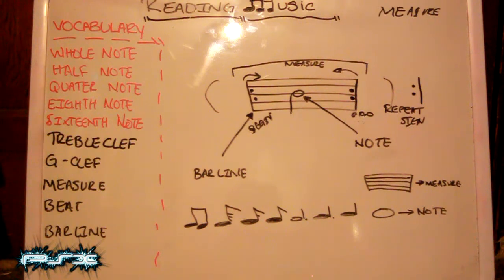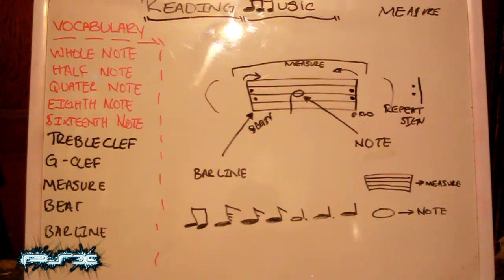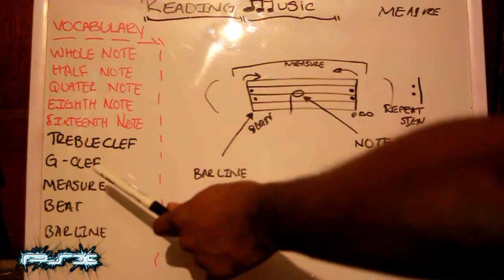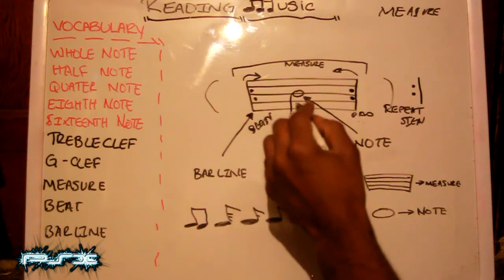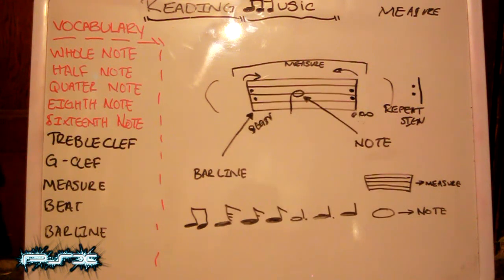That's the basics of a measure. If you have any questions, please note it in the comment box below. This is just the basics of a measure — it could get a little bit complex depending on what instrument you're playing, but for saxophone purposes, that's pretty much it for the beginner level. You have a treble clef, you have the bass clef, you have the measure, and you have the beat. When you see a measure, you have a specific number of beats per measure.